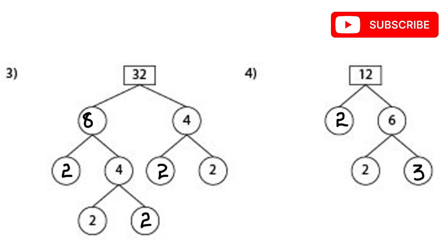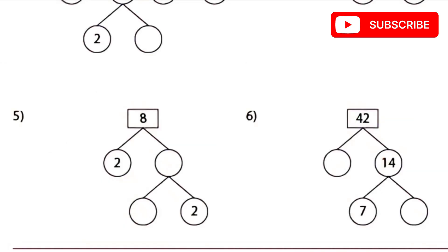Next question is 12. 12 can be divided into 6 and 2, since 2 times 6 is 12. Then 6 can be divided into 3 and 2. So the prime factors of 12 are 2 × 2 × 3.